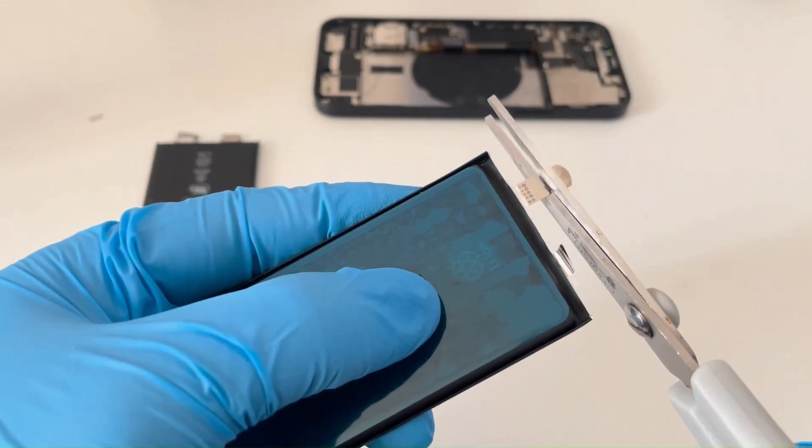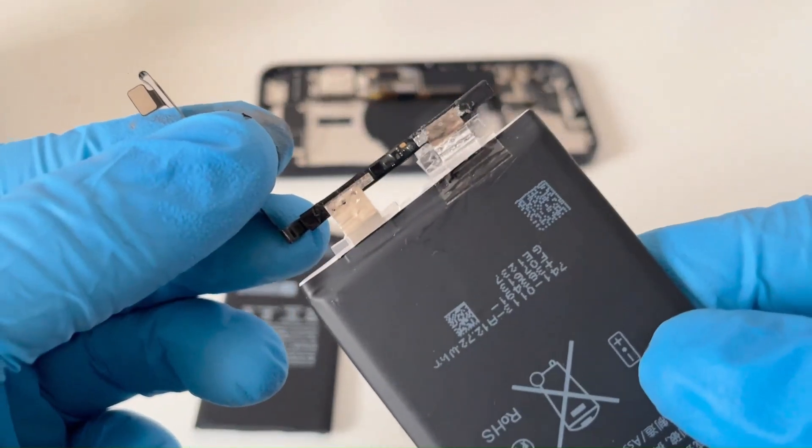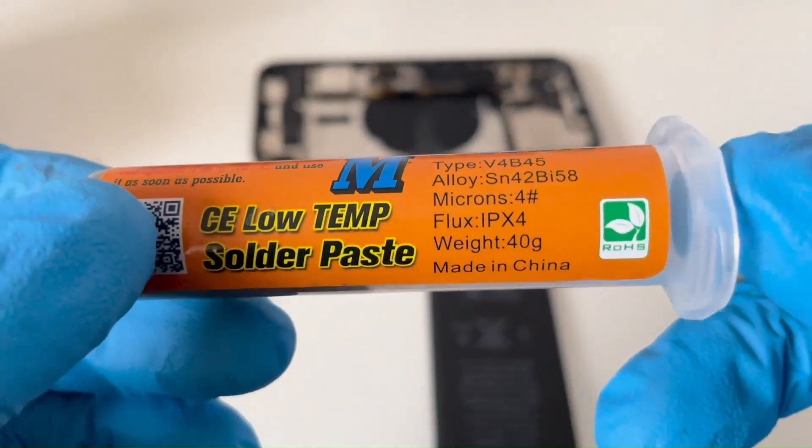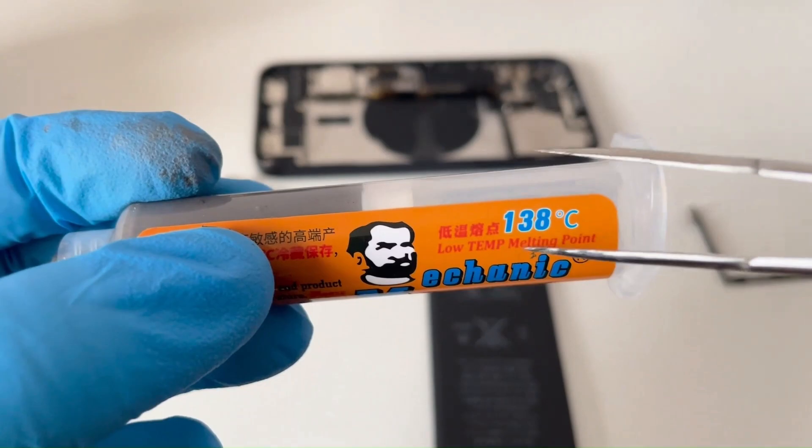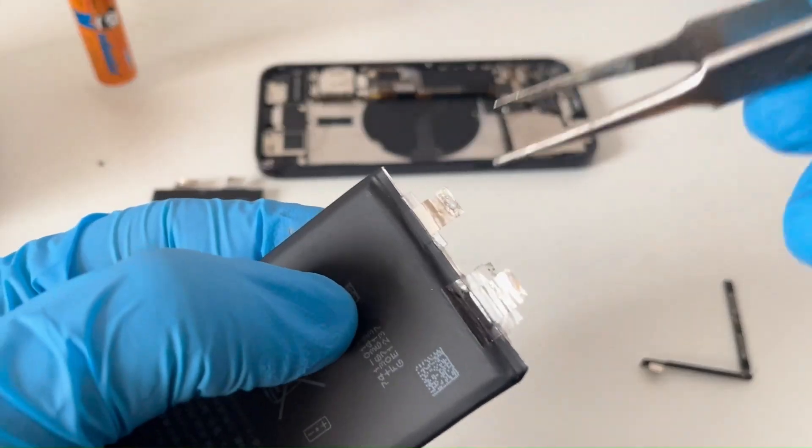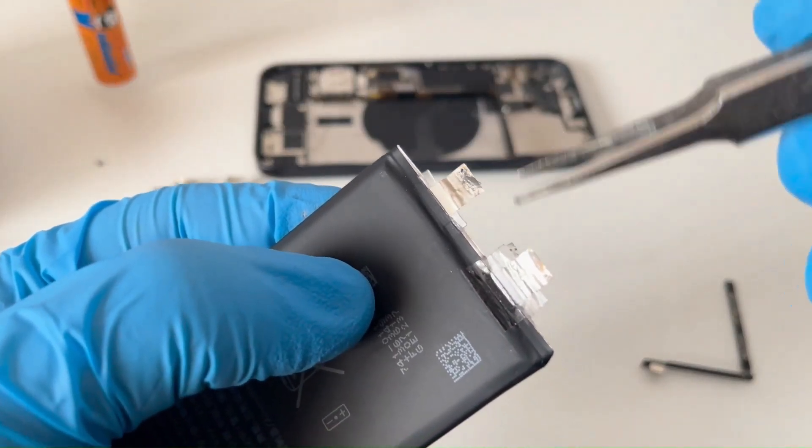Now it's time to weld these two pieces just like it was on the old battery. For this I need flux paste and solder paste. I usually use solder paste that has low temperature melting point because high temperature can destroy the circuits on BMS. I take a bit of the paste and apply it to the places where it needs to be welded.